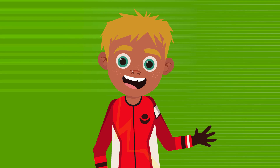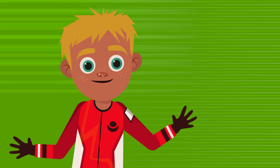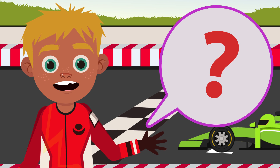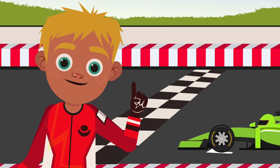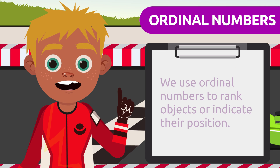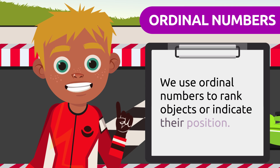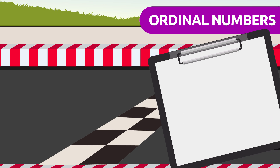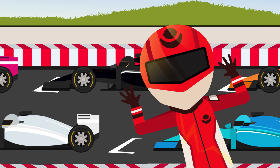We don't use numbers only to count — many times we also use them to order things and define their position. For example, at the end of this race we'll need to know who came in first or last. To do that, we will use ordinal numbers. Ordinal numbers are used to rank objects or indicate their position.